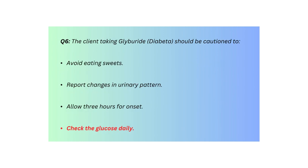Q6. The client taking Glyburide should be cautioned to: avoid eating sweets, report changes in urinary pattern, allow 3 hours for onset, or check the glucose daily.